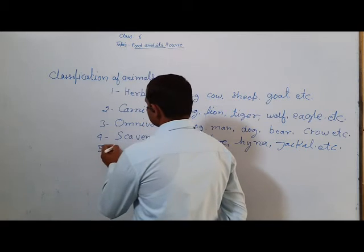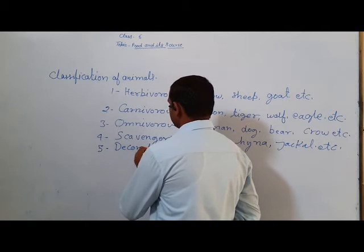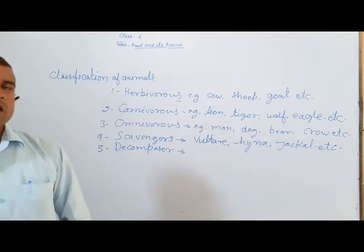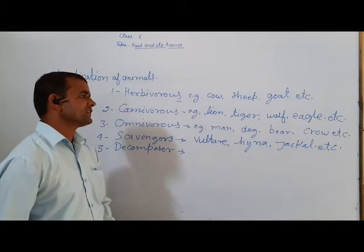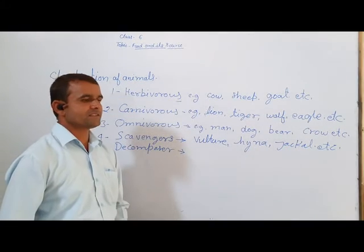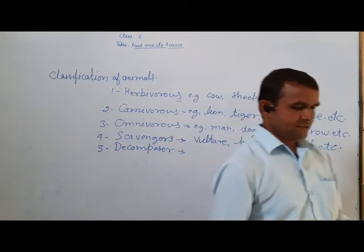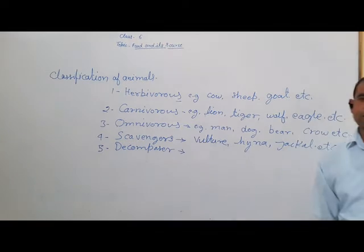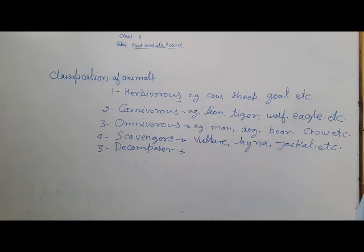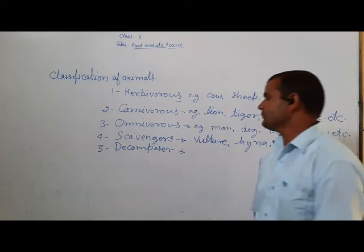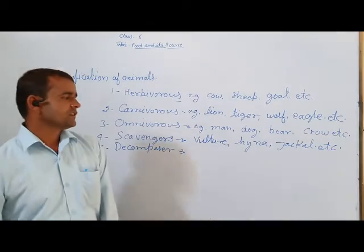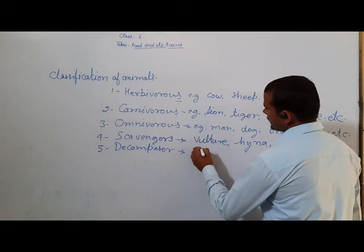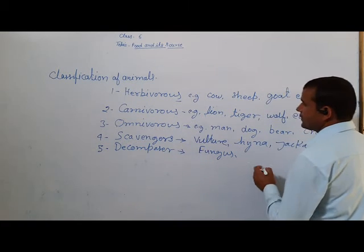Decomposers. Bacteria and fungus decompose dead animal bodies and return nutrients to the soil. They take their food from this decomposed body. These are called decomposers. For example, fungus and bacteria.